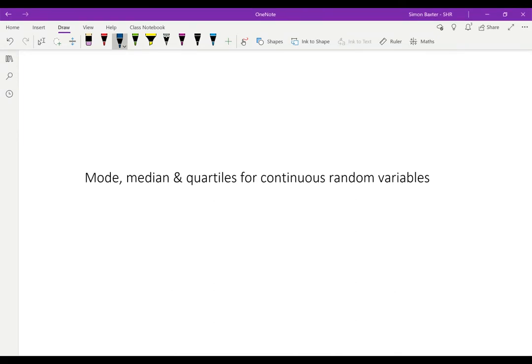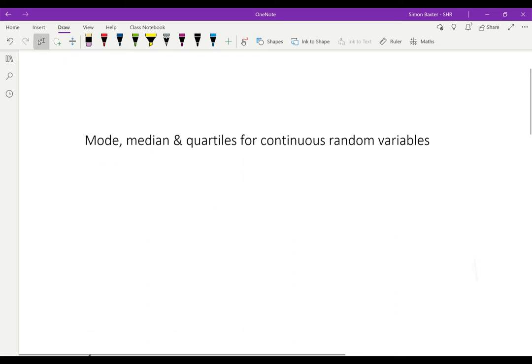Today we're going to look at the mode, median, and quartiles for continuous random variables. Let's start with the mode.